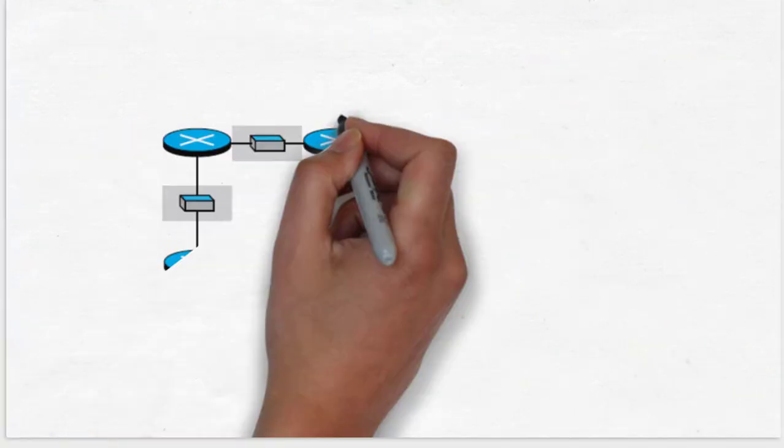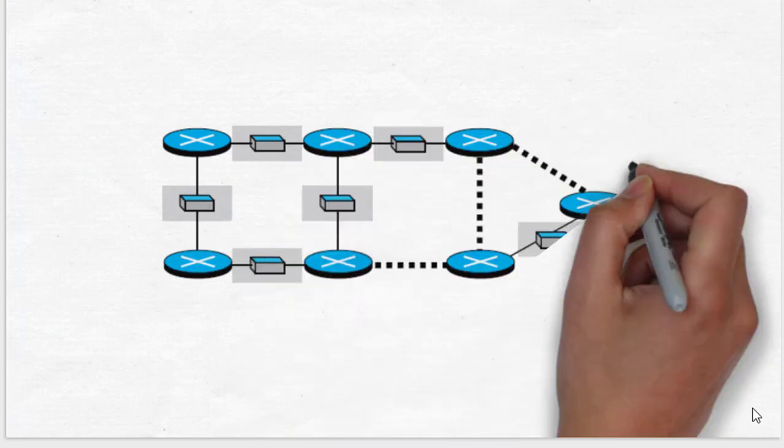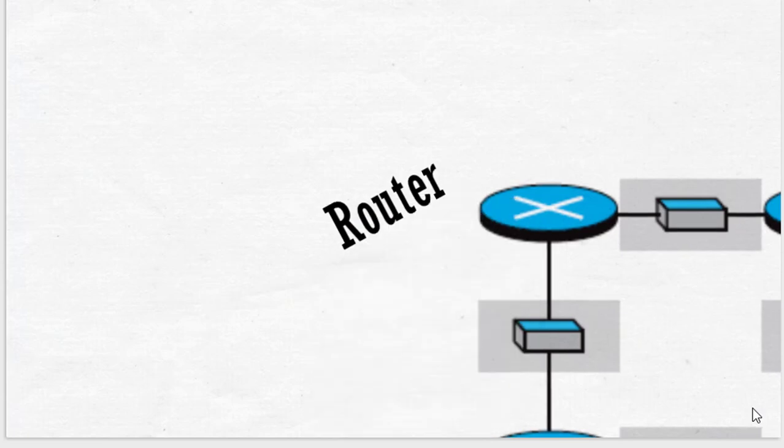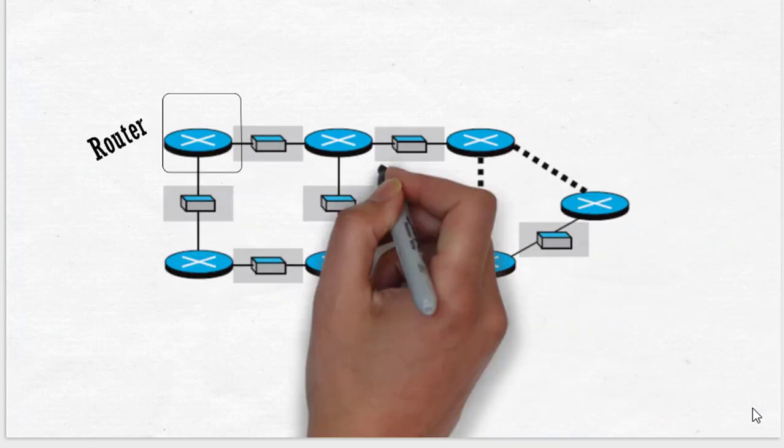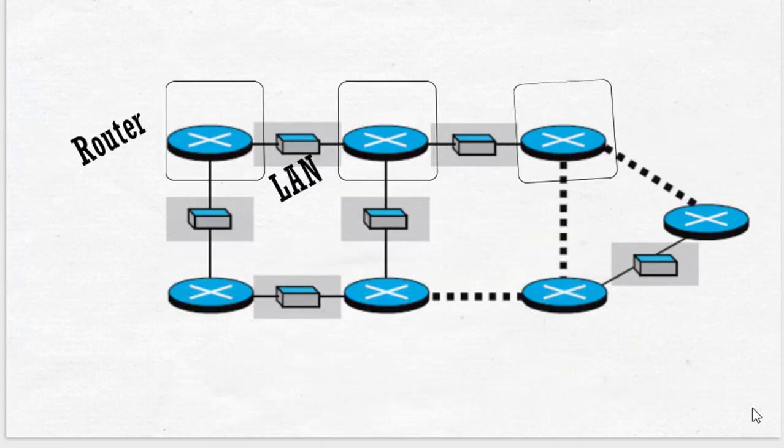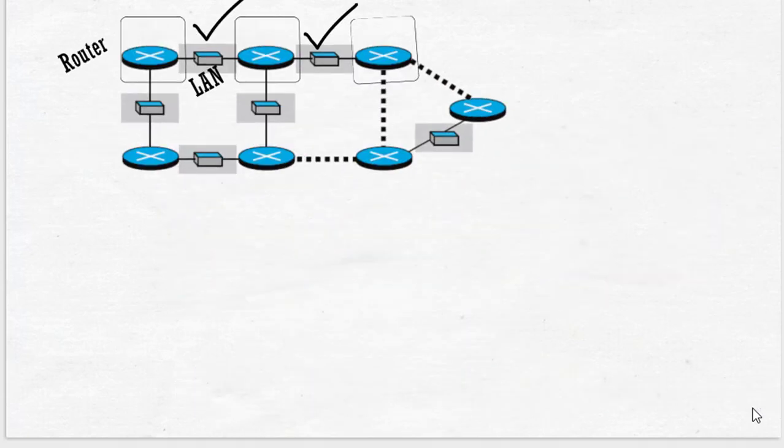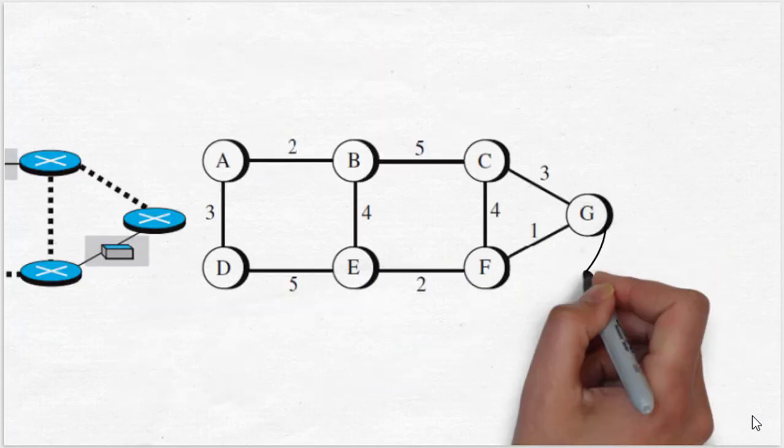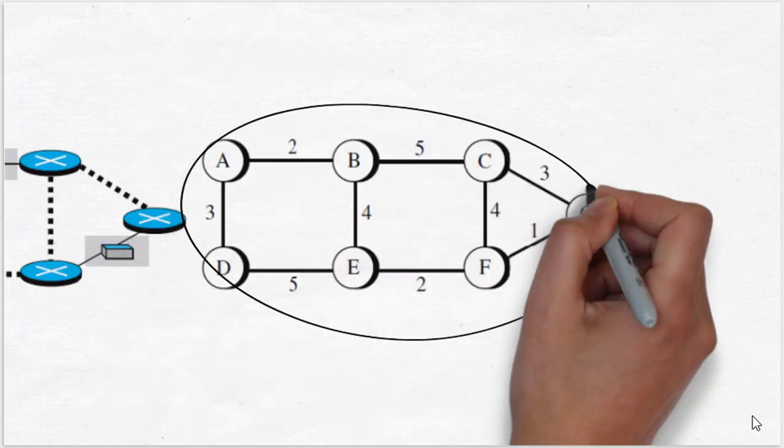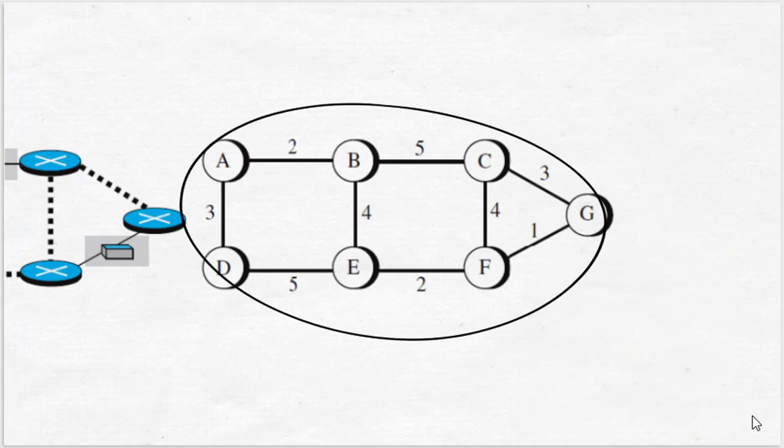For example, let us take a network system. The symbols shown here are the routers connecting local area networks. The weighted graph is shown here having nodes and links, where nodes are representing routers and in between links are shown with cost.